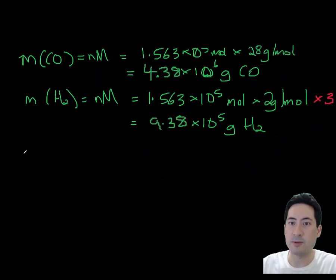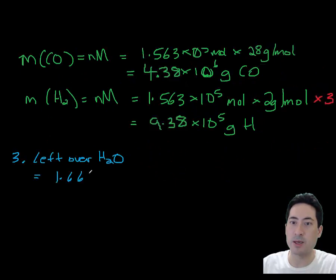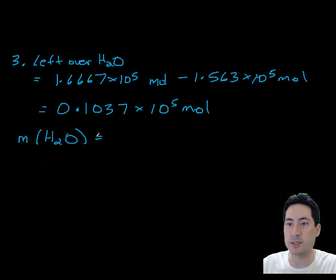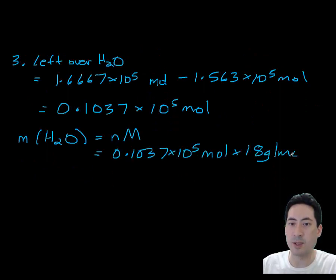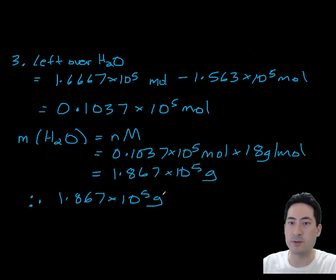We have initially 1.66 and so we only need 1.5. That only gives us 1.037 left over. If we work out the mass of that, we get to a final answer that we will have 1.8 × 10⁵ grams of water left over.